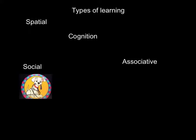Social learning is learning through observations and interactions with other individuals. For example, when a dog wants to go on a walk, it learns to grab its leash and bring it to its owner. Imprinting is when an animal figures out who their mother is when they go through a critical period.